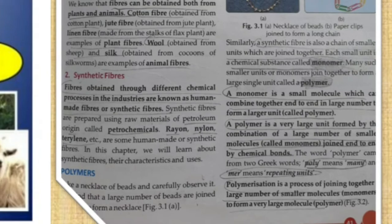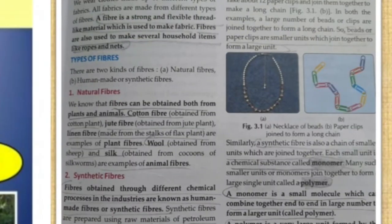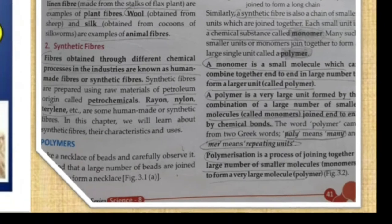Now we are going to learn the definition of monomer. Look at a necklace — so many beads are here. And here you can see paper clips arranged in a series. Each unit of the necklace or the paper clip chain is a monomer. Every individual unit in the long chain is called a monomer.